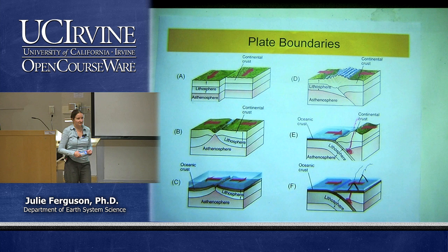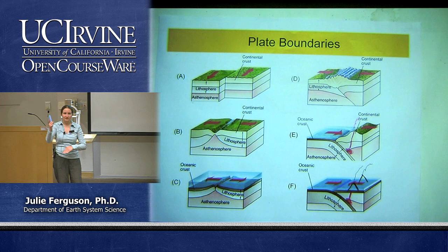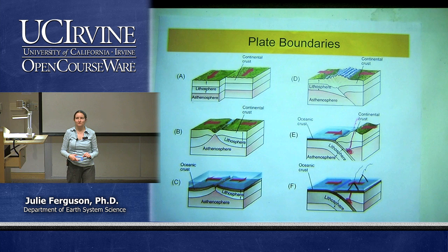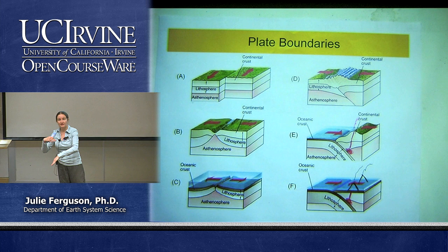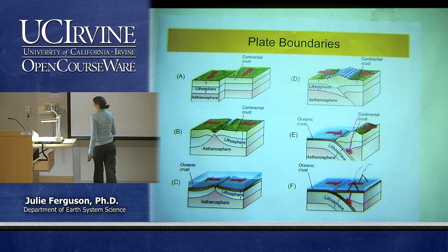Boundary F is convergent with oceanic crust on both sides. We get a trench and a volcanic arc — a line of volcanic islands. For both E and F we get volcanoes and earthquakes, and the earthquakes are both shallow and deep: shallow where the plates meet, and progressively deeper as the subducting slab descends into the mantle.